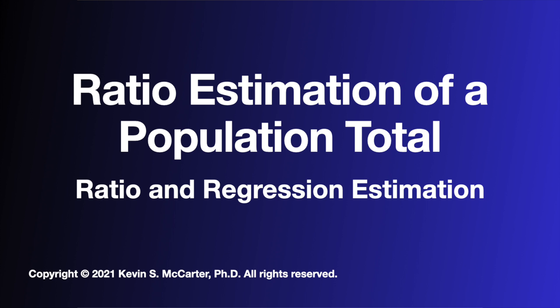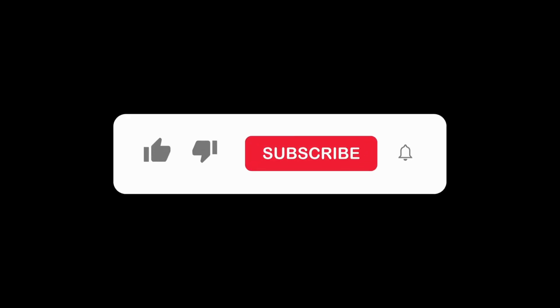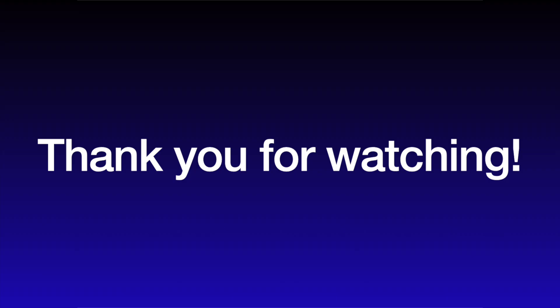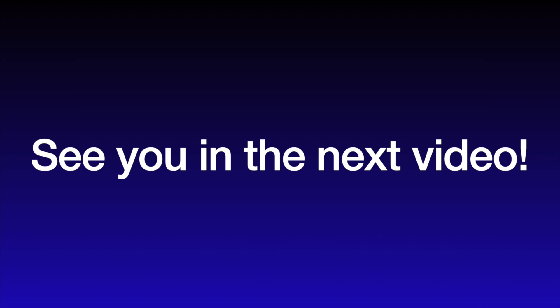That's how we use ratio estimation to estimate a population total with both a point estimate and an interval estimate. The ratio estimator will be more precise than simply estimating the total of y using only the y values, as long as there is a proportional relationship between y and x. The stronger that proportionality relationship, the more precise the ratio estimator will be for the mean or total of y.